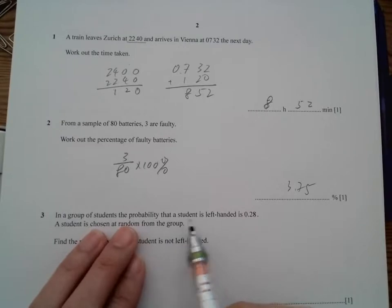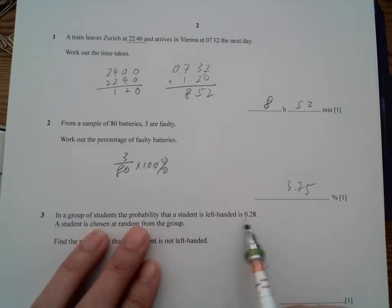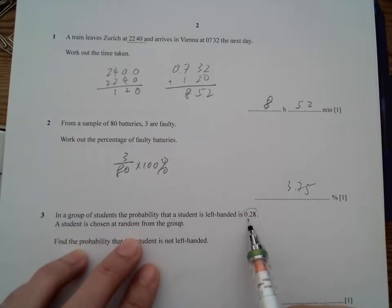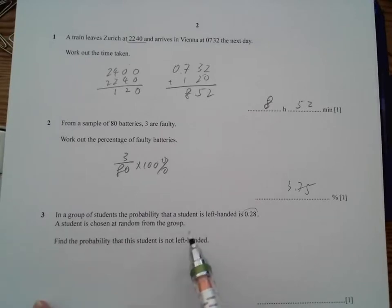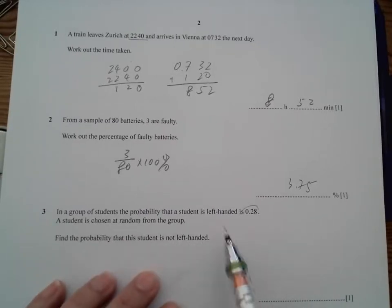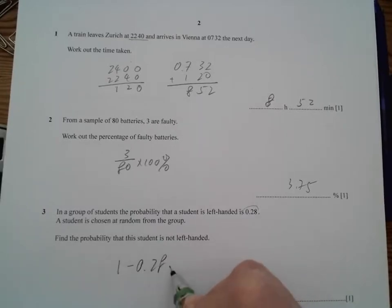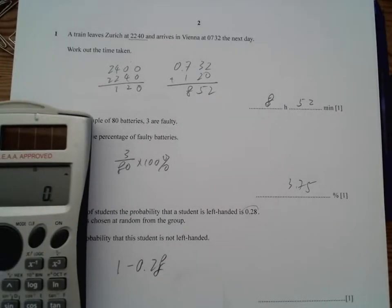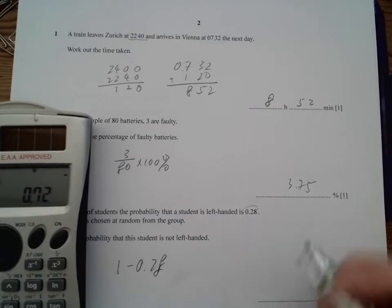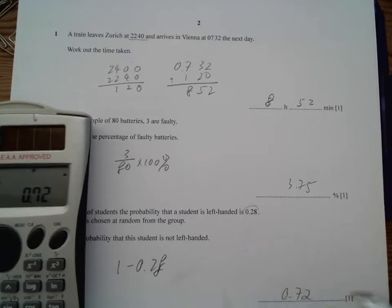Moving on, a group of students, the probability that a student is left-handed is 0.08. Find the probability is not left-handed. So it's 1 minus, if it's not left, it should be right. So 1 minus 0.08. So we have 1 minus 0.08, and then we got 0.92 is the probability.